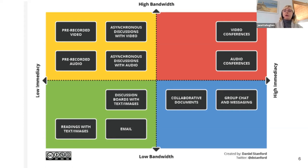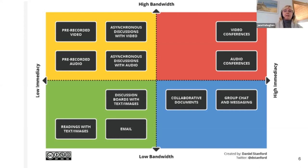In the top right quadrant we have things like Zoom and Google Meet — high immediacy and high bandwidth. Depending on your students' access and connectivity, this may be difficult for some. In the lower left quadrant we have low immediacy, low bandwidth strategies such as discussion boards. All LMSs have discussion boards. You can also post readings with text and images, and there's email, though I don't recommend it highly. In the final blue quadrant — high immediacy, low bandwidth — that includes group chats, messaging, and collaborative documents in Google Drive or Google Docs.